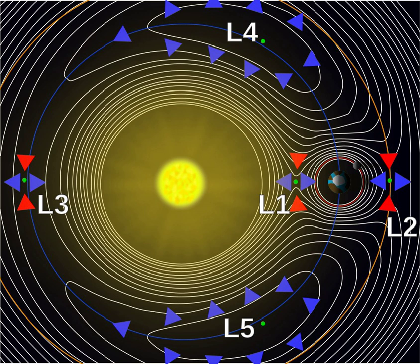In May 2018, Farquhar's original idea was finally realized when China placed the first communications relay satellite into a halo orbit around the Earth-Moon L2 point.